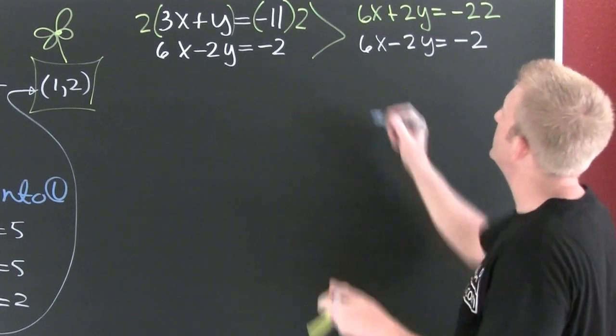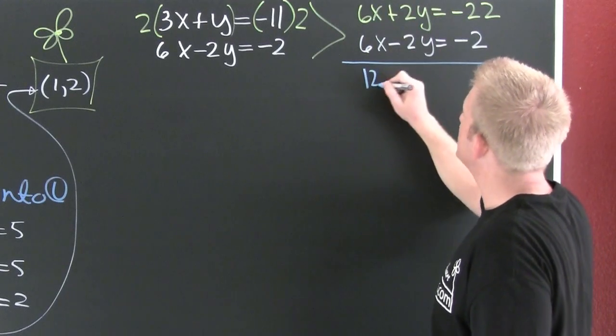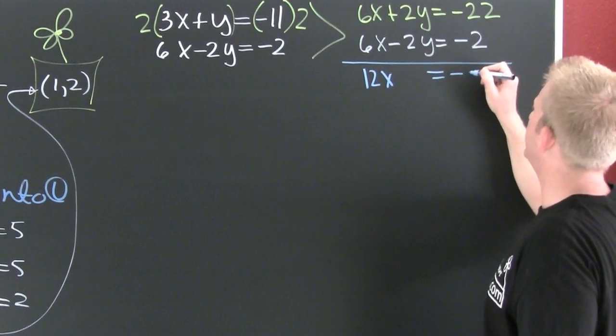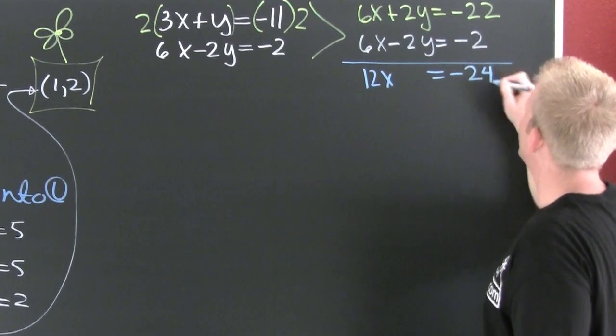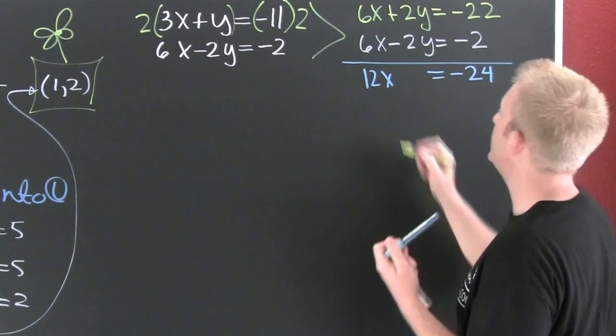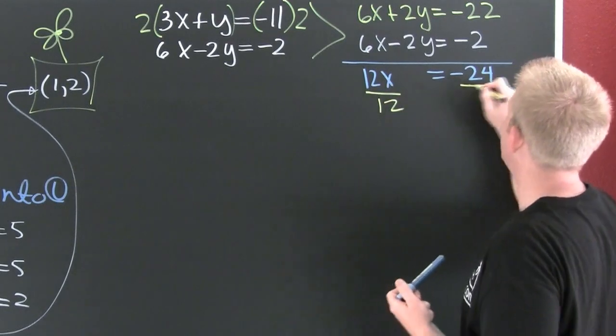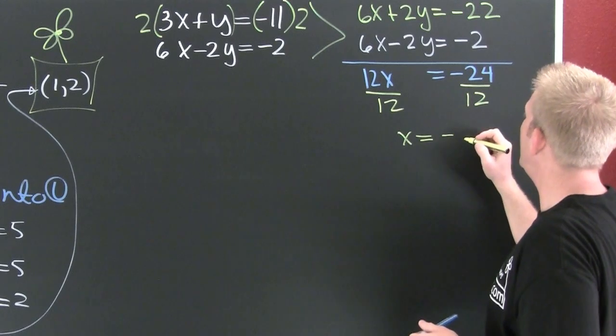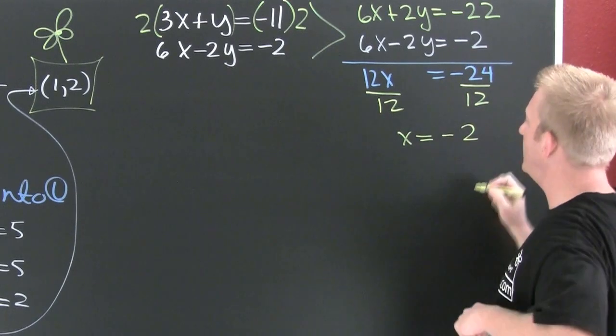Add them. So I'm going to add them straight on down. 6 and 6 gives me 12x. No y. And then this is a minus, wait for it, 24. Finish him. I'm going to divide both sides by 12. And when I do this, it appears to me that x is going to be a minus 2.